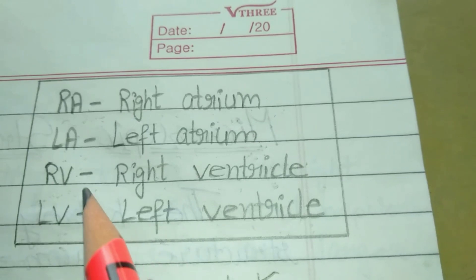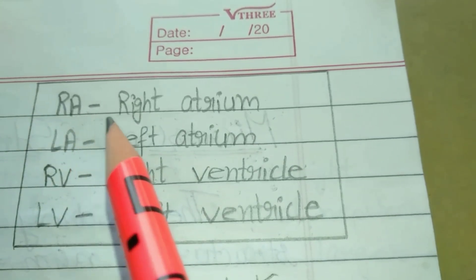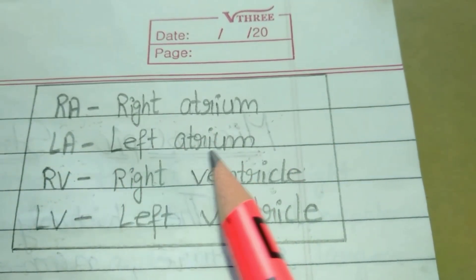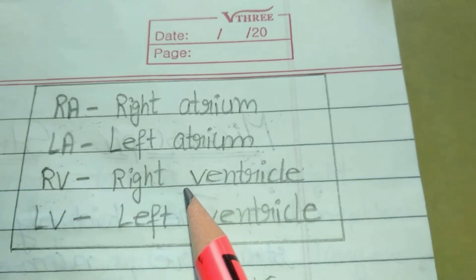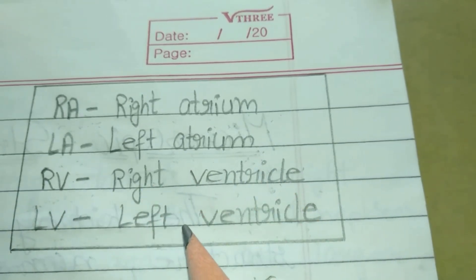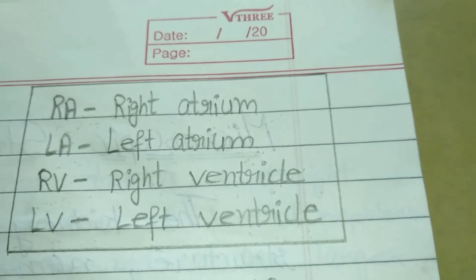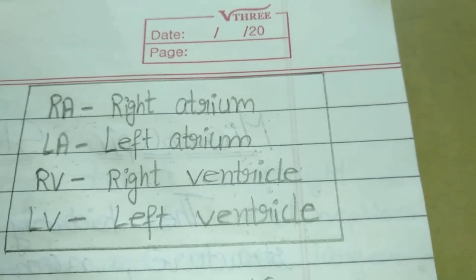Before proceeding to the topic, please note some keywords: RA is right atrium, LA is left atrium, RV is right ventricle, and LV is left ventricle. So let's get started with our main topic, that is blood circulation in heart. I will discuss it through a diagram.